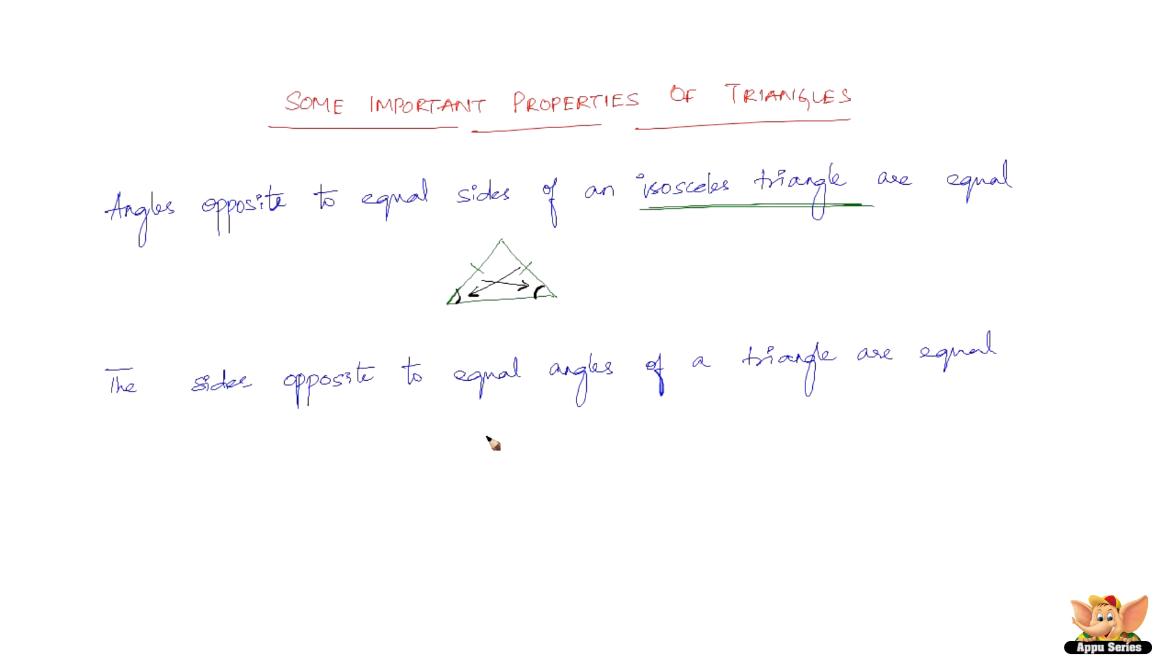The second property is more of a converse of the first one. It says that if you have two equal angles, say if these are the two equal angles, then the sides opposite to these angles are equal. So this side and this side are equal. So it is quite the inverse of the first one.